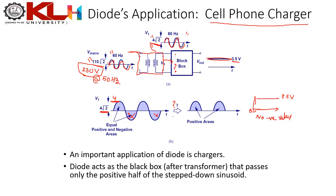What the diode seems to be doing is cutting off the negative values entirely — only the positive values remain, and the negative half cycle is completely cut out. So the diode is cutting out the negative values and passing only the positive values. This is the major conclusion: the diode cuts off the entire negative half cycle.